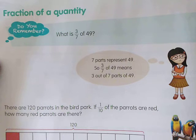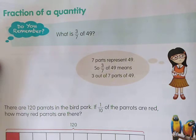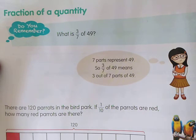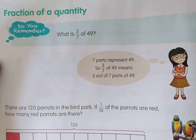If we make four parts of that object, then we have to express that each part is a fraction of that quantity. For example, suppose one pizza is there and if we cut that pizza into four pieces, then each part is a fraction — that is one-fourth of that pizza.